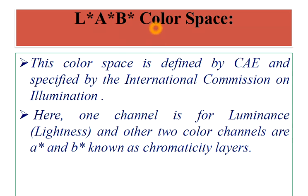Here we have three components. One component is for luminance, that is lightness, and the other two color channels are A* and B*, and they are known as chromaticity layers. So one channel is luminance — that is L — and A* and B* are chromaticity layers.